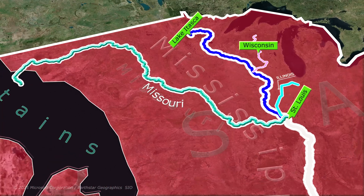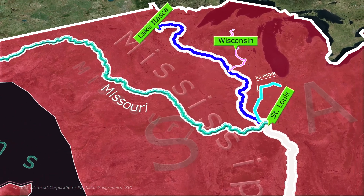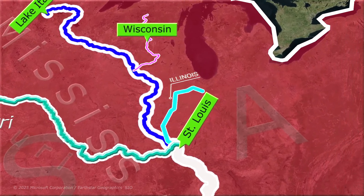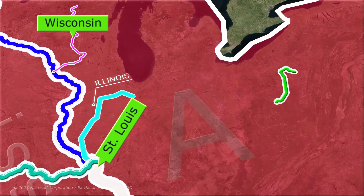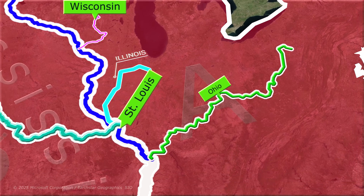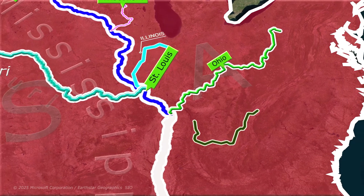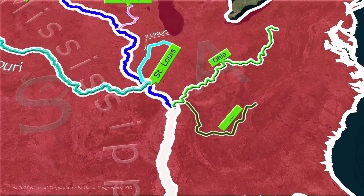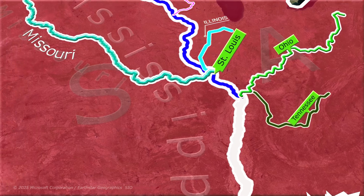The Missouri River is the longest river in North America. Further downstream, the Mississippi is joined by the Ohio River, together with its tributary, the Tennessee River.